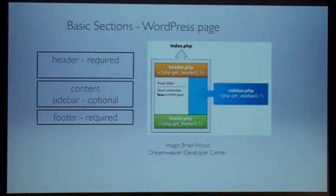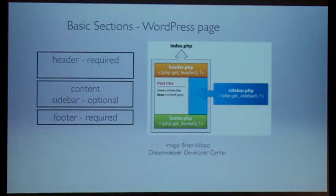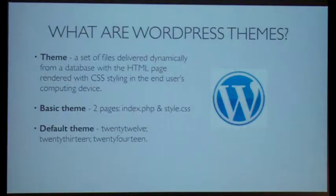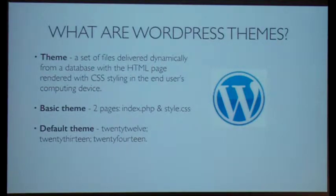The basic sections of a WordPress page are header, content, and footer, and the sidebar is optional. WordPress themes are a set of files delivered dynamically from a database with the HTML5 page with CSS styling.